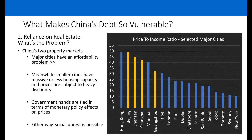Those price cuts sparked angry protests from those who had paid full price previously — important to consider given that maintaining social order is a key part of the Chinese Communist Party agenda. This presents a monetary policy dilemma: if rates are reduced, house prices likely increase, worsening the affordability problem in major cities; if rates are increased, demand in tier 2 and tier 3 cities falls further, leading to more discounts. Either way, there's a distinct possibility of social unrest.